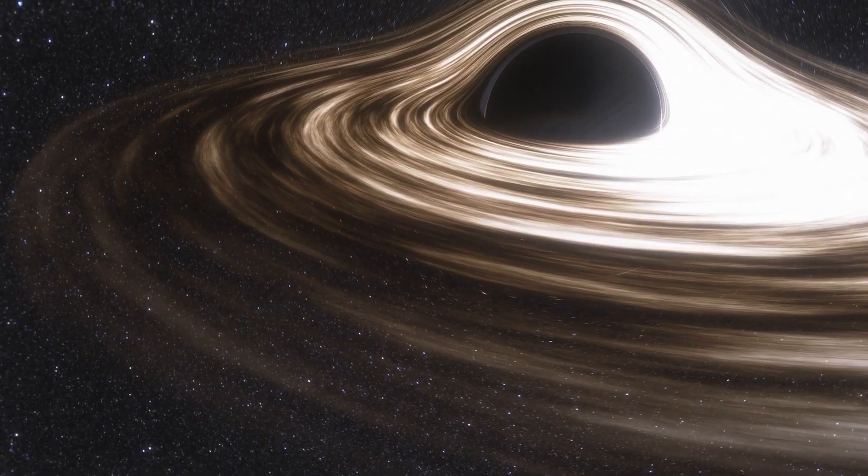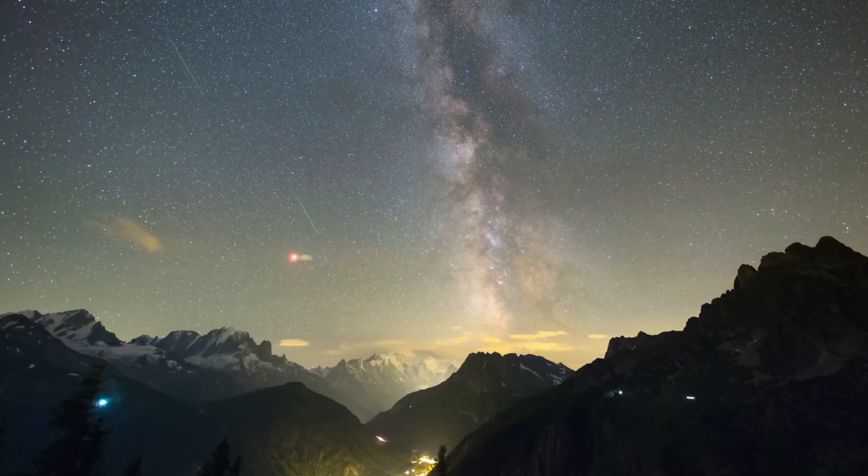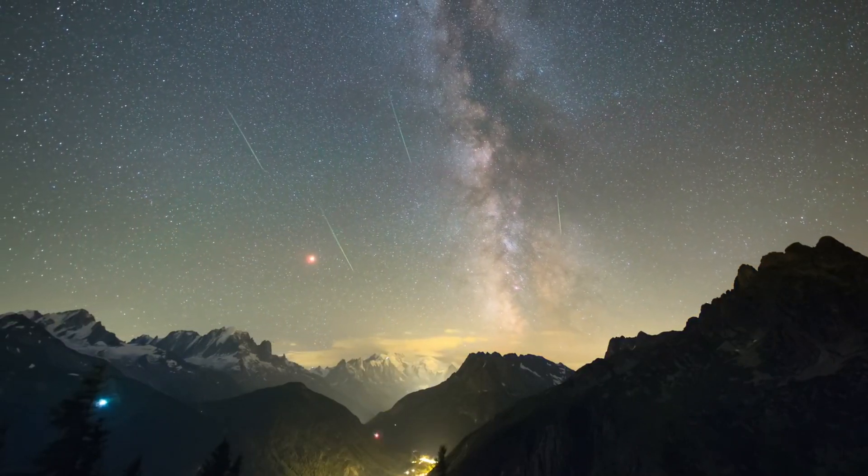There is a black hole at the center. Most galaxies have a supermassive black hole at the center, and the Milky Way is no exception. The center of our galaxy is called Sagittarius A.